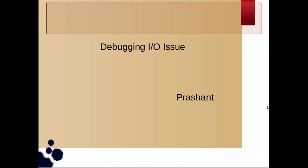Hello everyone, my name is Prashant and today I am going to discuss debugging I/O issues. The aim of this presentation is to show the biggest open source tools available and how we can use those tools to narrow down the issue. The main idea is that disk is the slowest among all the components in our system — CPU, memory, and disk — and that is the reason it causes performance bottlenecks. In this presentation I am going to show you the various tools, so let's get started.